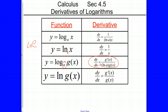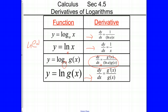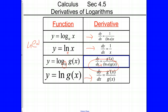The natural log of E is equal to 1. So in this formula, the natural log of E is just 1, and so what you have is G prime over G, which is the same thing. This formula — the one I circled — is the most important one. You can use that one for all of them.